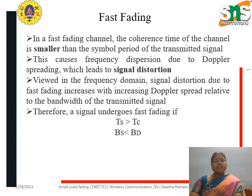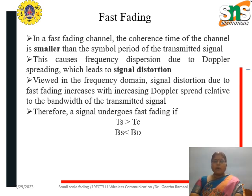In case of a fast fading channel, the coherence time of the channel is smaller than the symbol period of the transmitted signal, which causes signal distortion. The condition for fast fading is: symbol time TS is greater than coherence time TC, and symbol bandwidth BS is less than Doppler bandwidth BD. These are the conditions under which the signal undergoes fast fading.